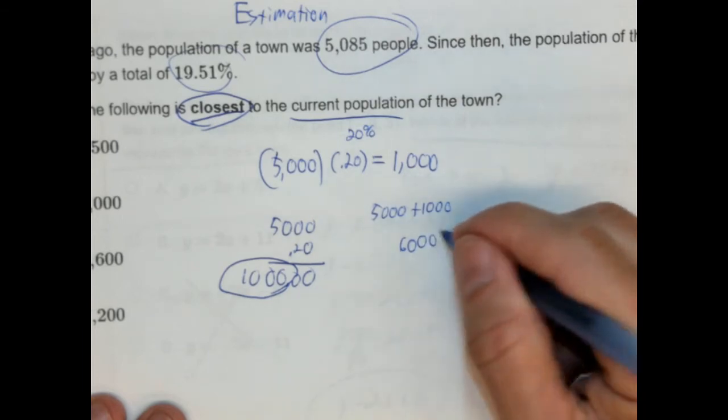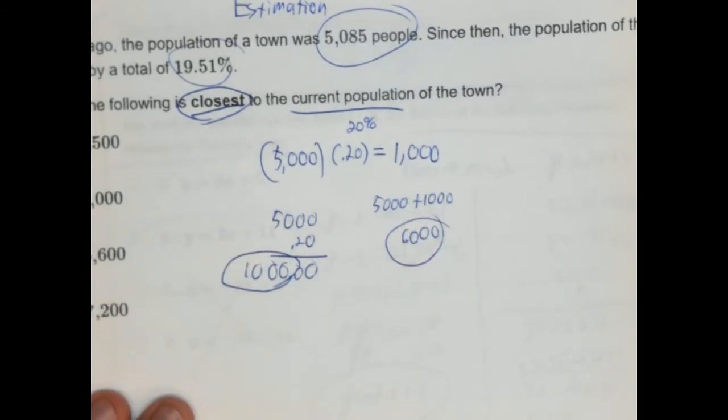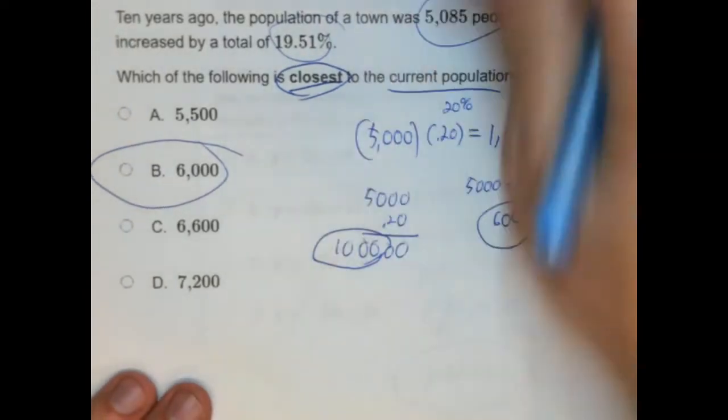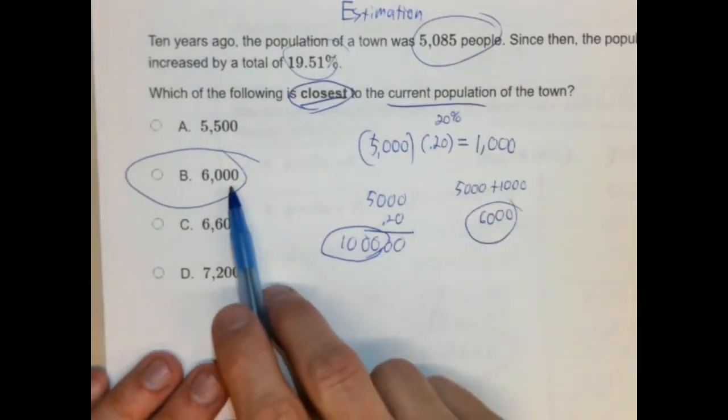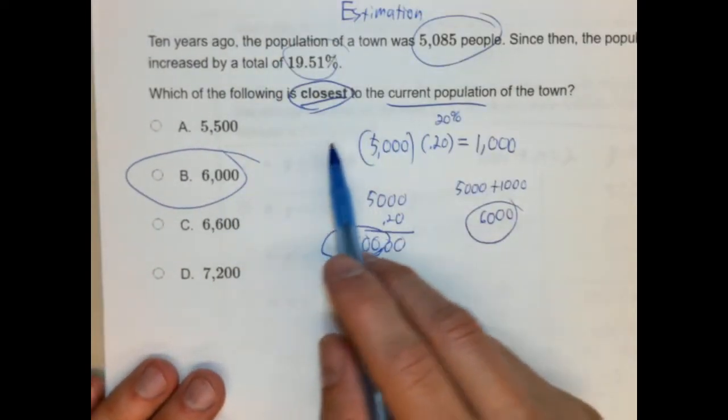Now, again, this is an estimation. But you get the right answer by doing it that way. So 6,000 is closest to the current population of town.